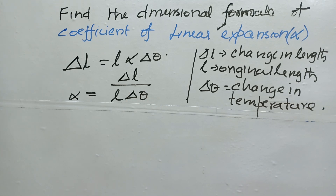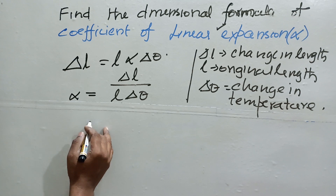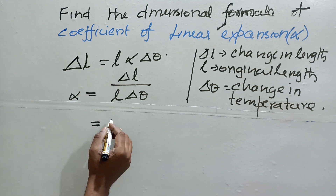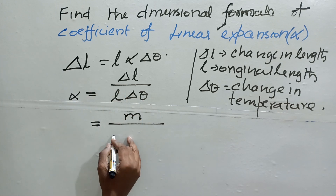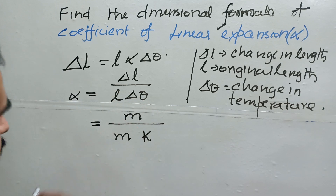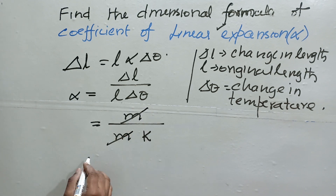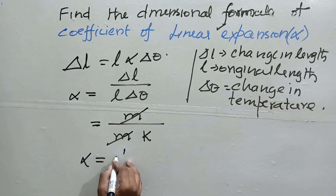Here, ΔL and L may be original length, final length, change in length, radius, or diameter — all are physical quantities of length, so their unit is meter. Meter divided by meter gets cancelled, and you are left with 1/K, so alpha is nothing but 1/K.